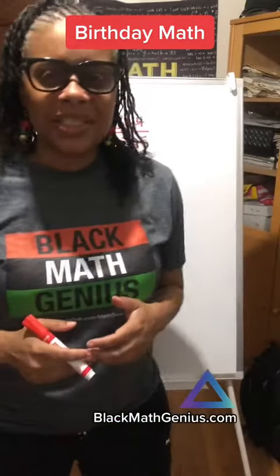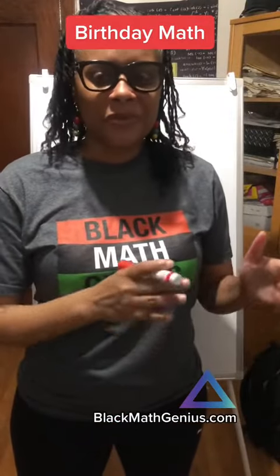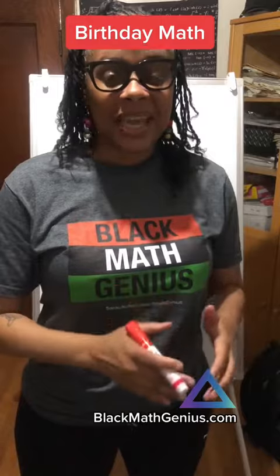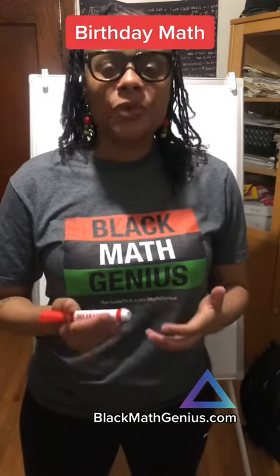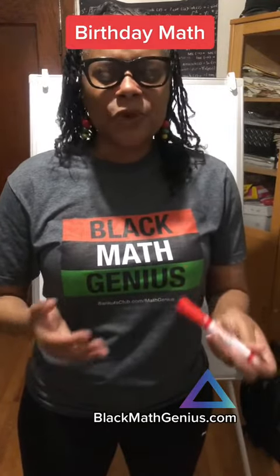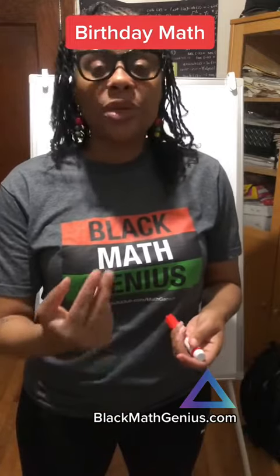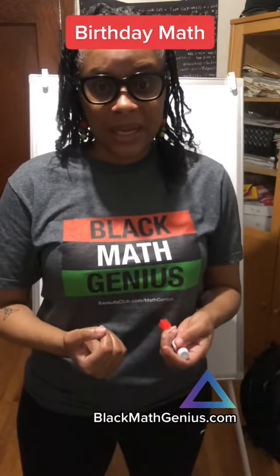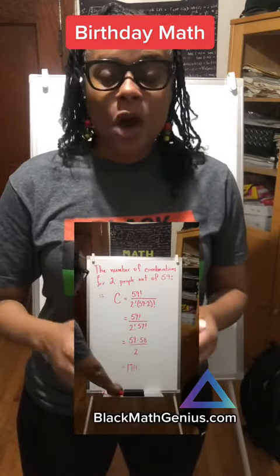Let's look at the probability of two people in a room of 59 having the same birthday. The first thing we need to know is how many different ways can we pull two people out of a room. Here's the math on that.